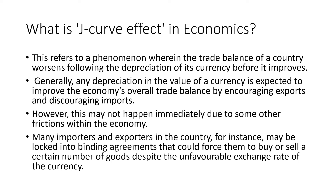The J-Curve effect means that soon after going for devaluation, it doesn't immediately improve your balance of trade. Initially, your balance of trade would deteriorate, but after some point in time, it would improve. Many importers and exporters in the country might be locked into binding contracts, which forces them to buy or sell a certain number of goods despite the unfavorable exchange rate. This is what gives rise to the J-Curve effect.